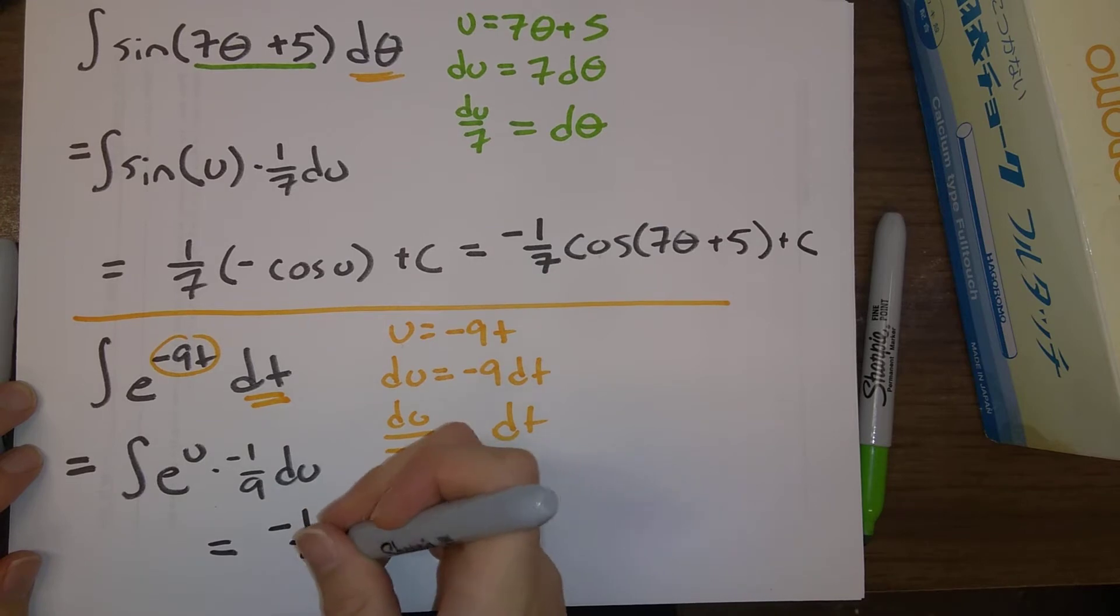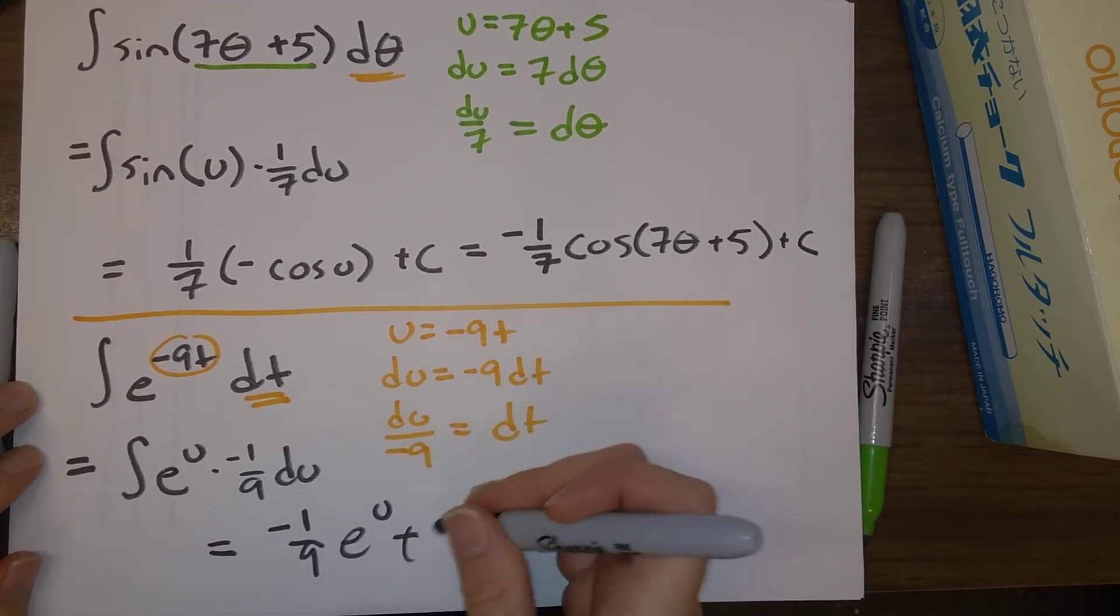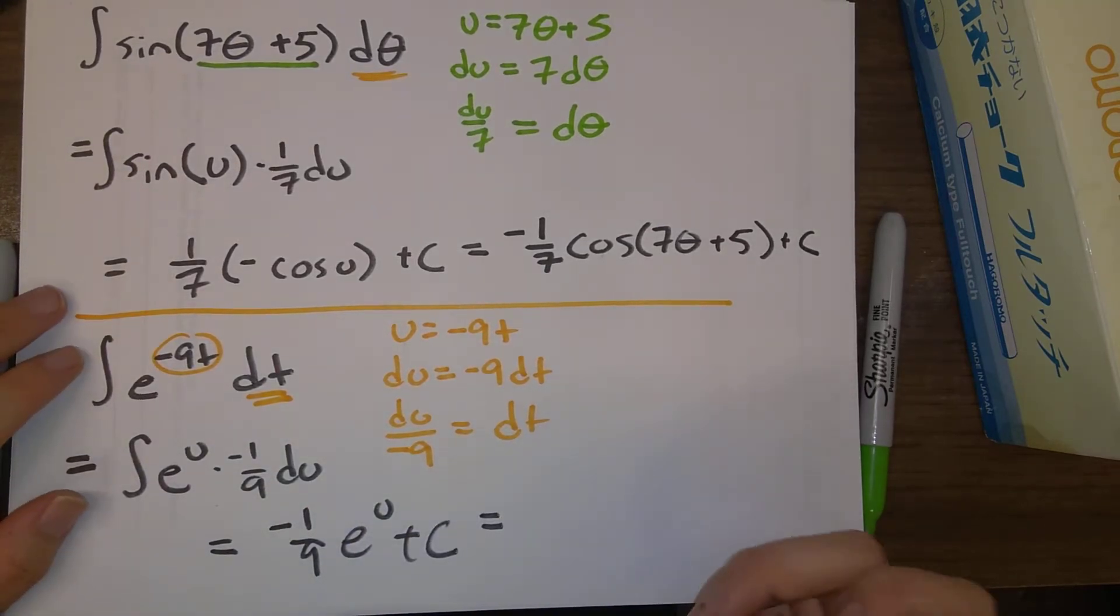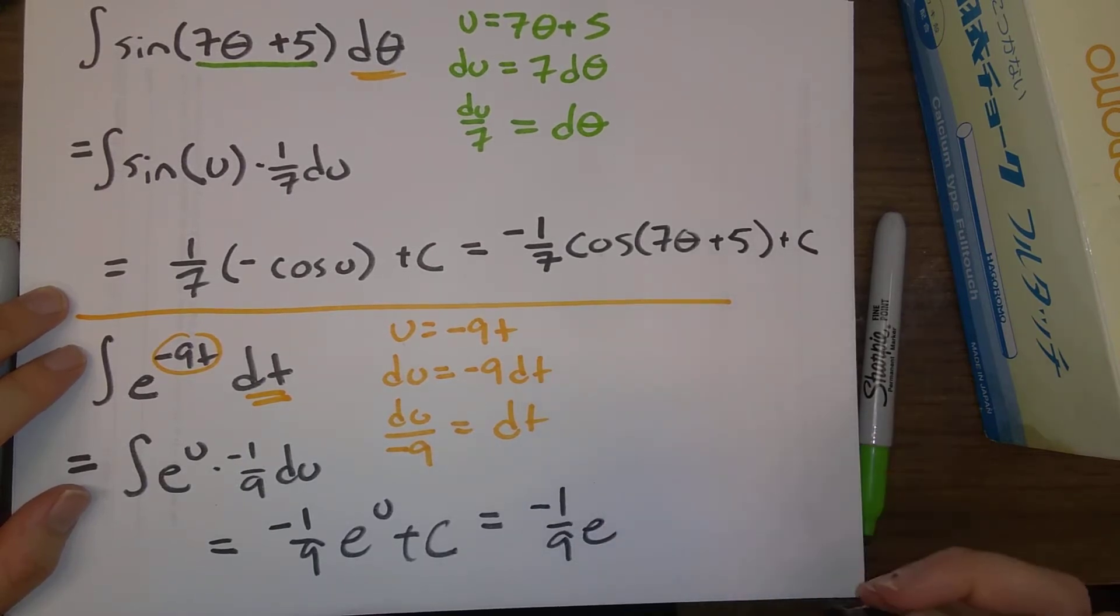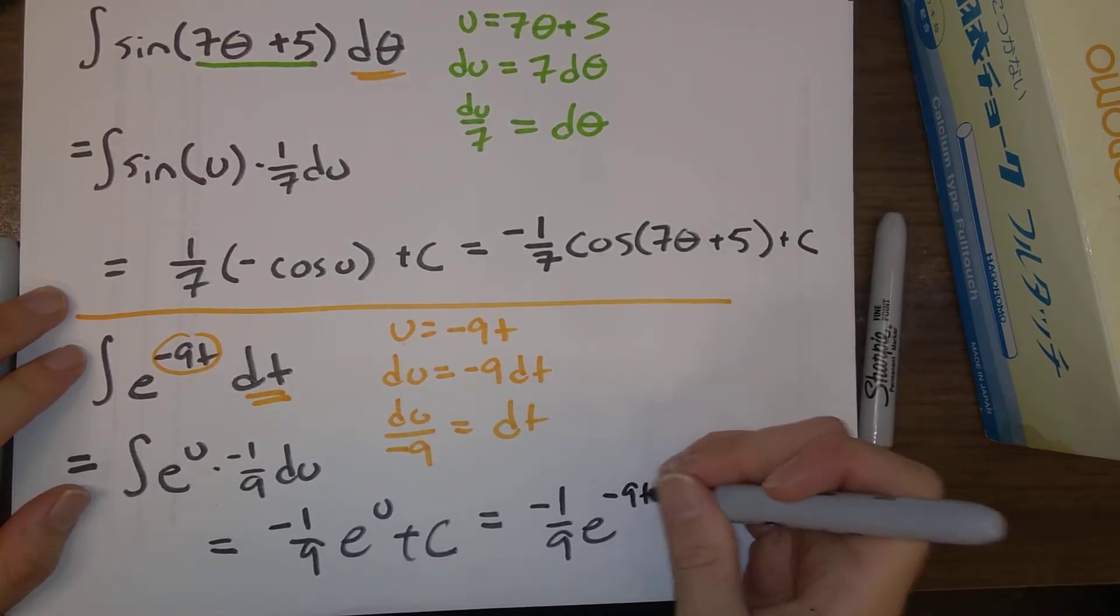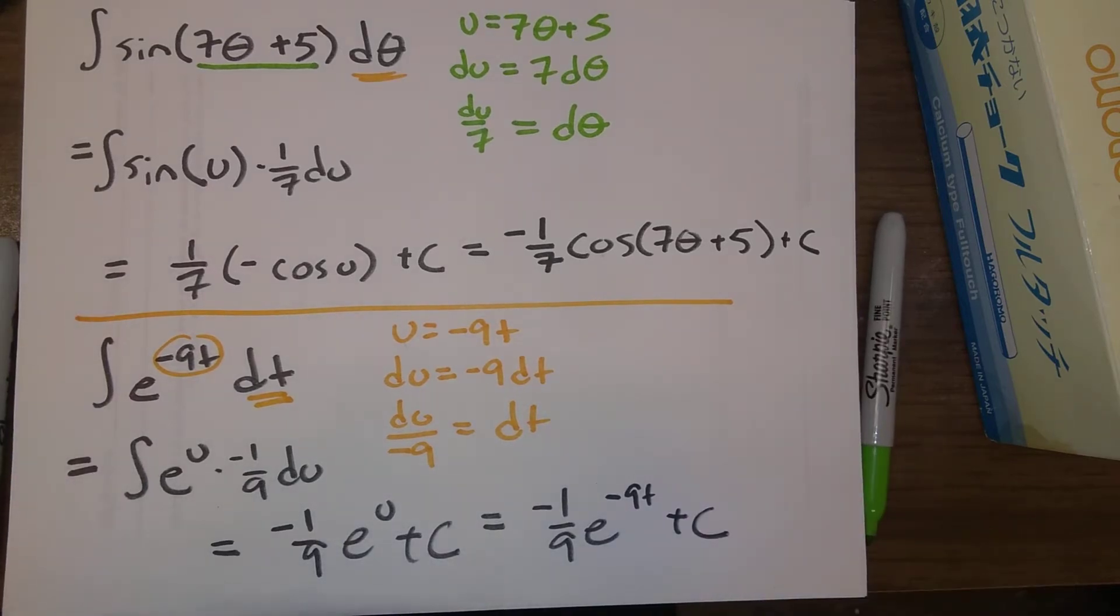Integral of e to the u, of course, is just e to the u. And the final step is, of course, replace that u with minus 9t. And there is our final answer.